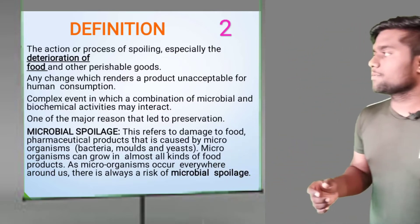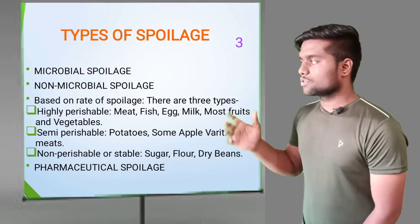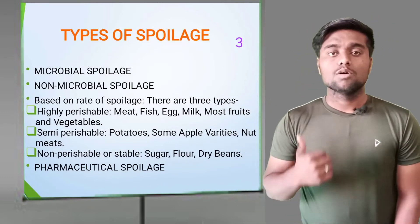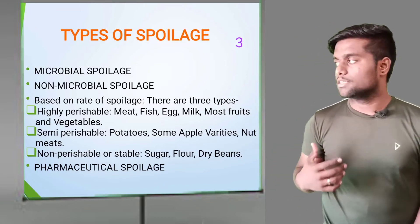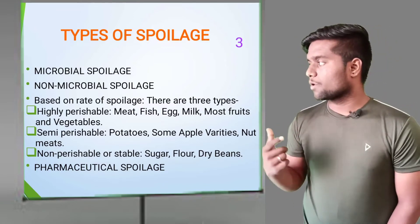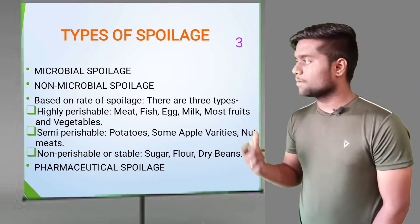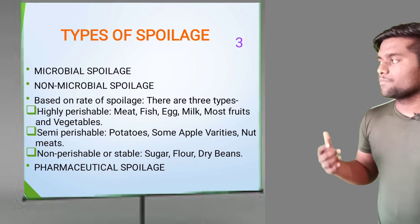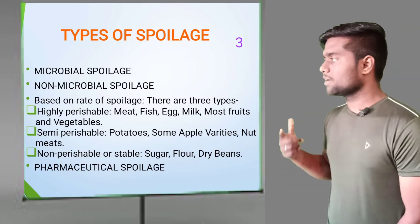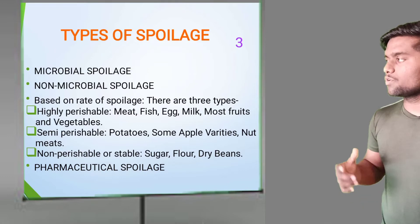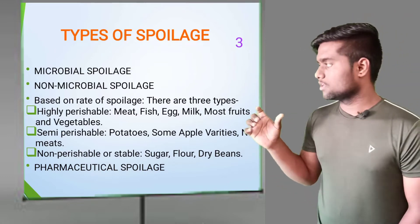Now we will see which types of spoilage exist. There are three types. The first is highly perishable — this includes meat, fish, eggs, milk, most fruits, and vegetables. These are highly perishable products that spoil quickly.